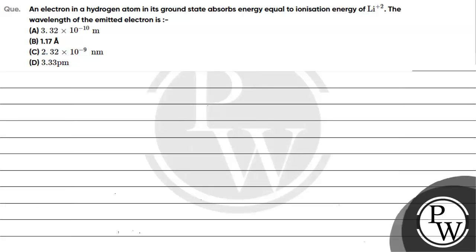Hello Bacho, let's read this question. The question says: an electron in hydrogen atom in its ground state absorbs energy equal to the ionization energy of Li²⁺. The wavelength of the emitted electron is — Option A: 3.32 × 10⁻¹⁰ meters.